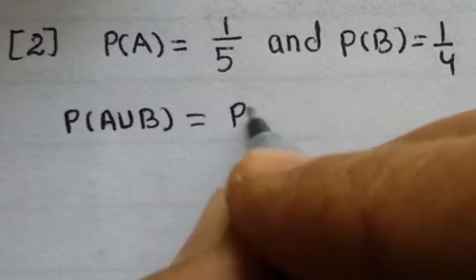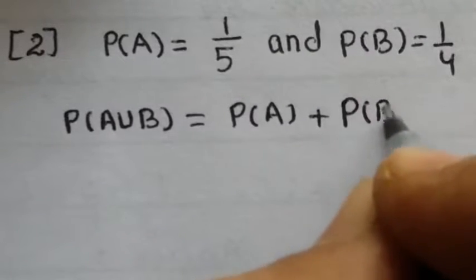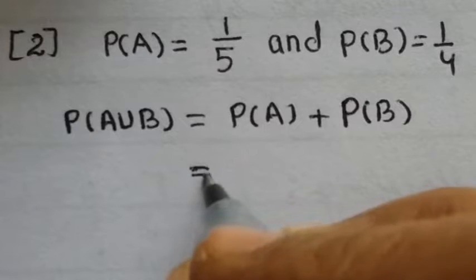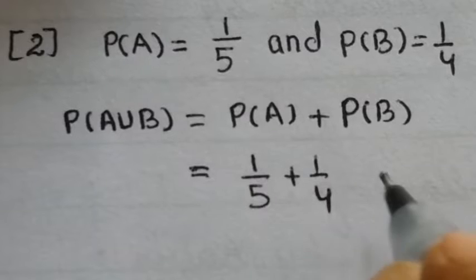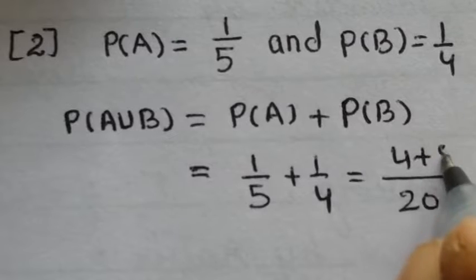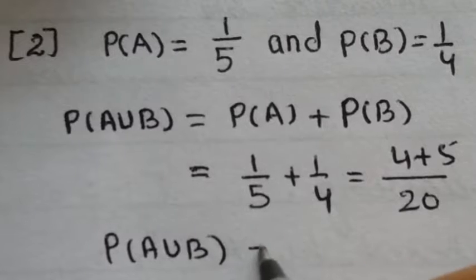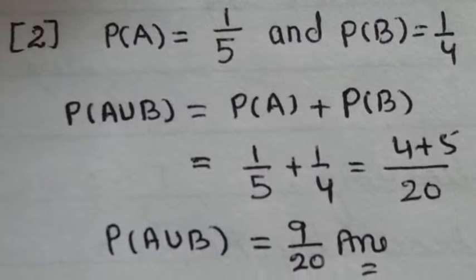The probability that one of the horses wins equals P(A) plus P(B). Taking 20 as the LCM, we get 4 plus 5 over 20, which gives us 9/20 as the answer. This is a very easy question.